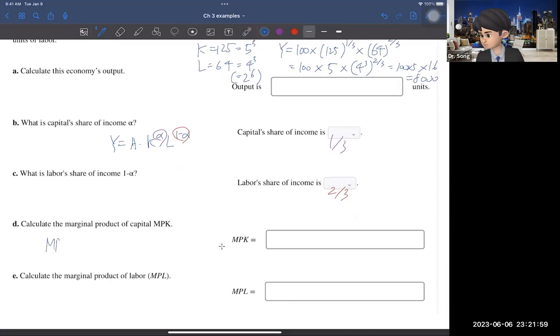So, I told you, by definition, marginal product of capital is F of K plus 1 minus F of K. So, what do you see? You fix the number of the workers, but you increase one more capital and see what happens to the output. That's the marginal product of capital. So this difference, by definition, is the marginal product of capital.